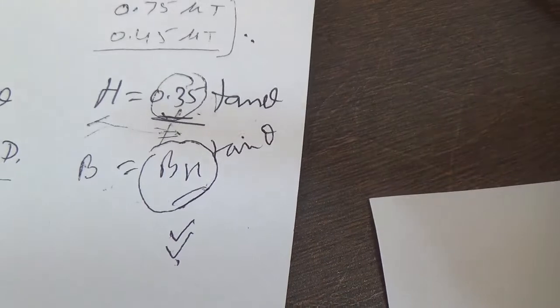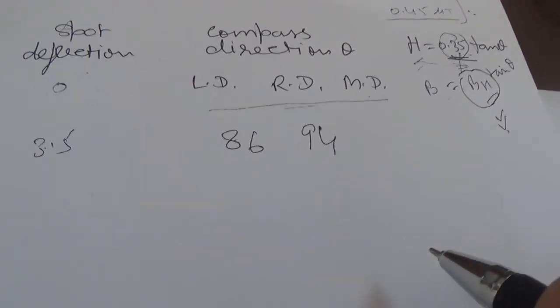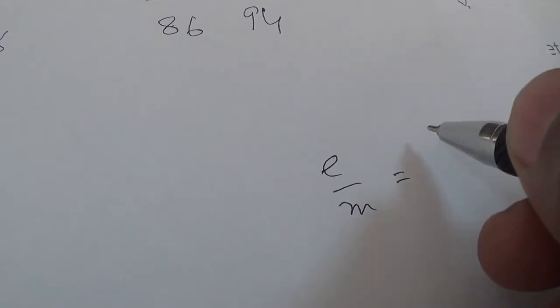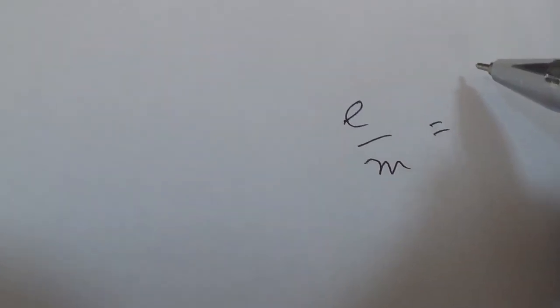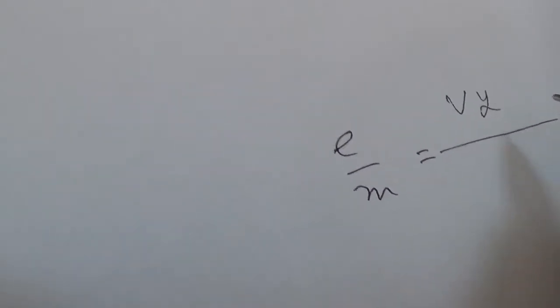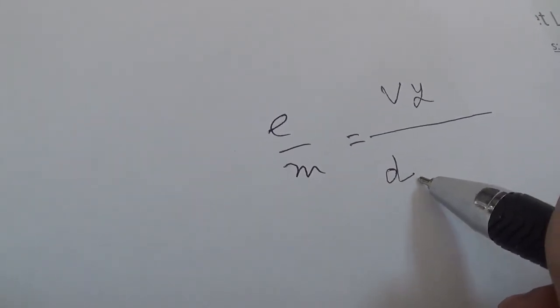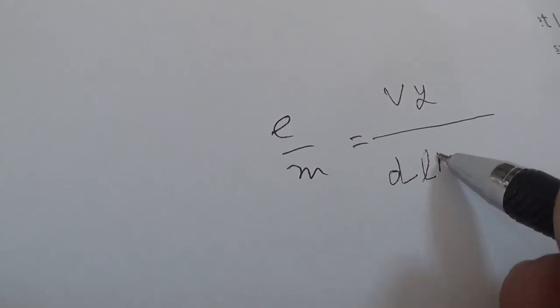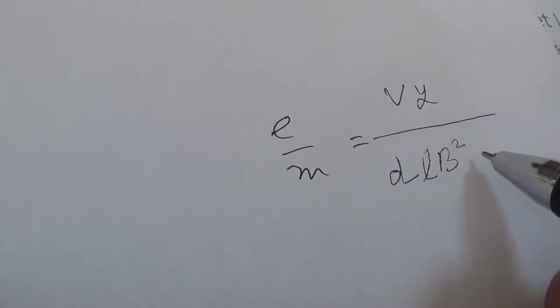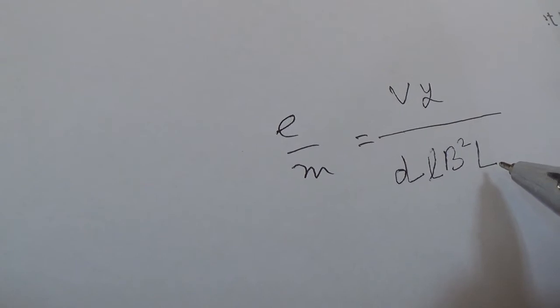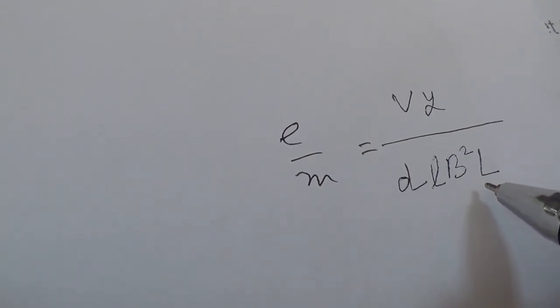Because here in this method where I'm using the bar magnet, we use the formula: e/m is equal to the voltage, the deviation from the center, the distance between the electric plates, the radial distance l, the magnetic field squared, and capital L, that is the distance from the screen to the edges of the plates.